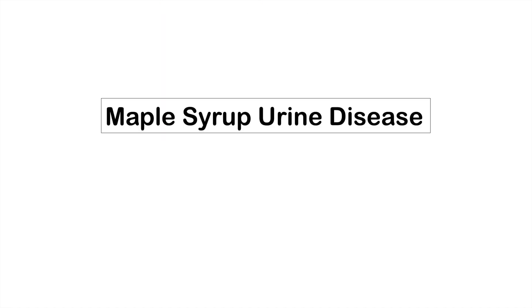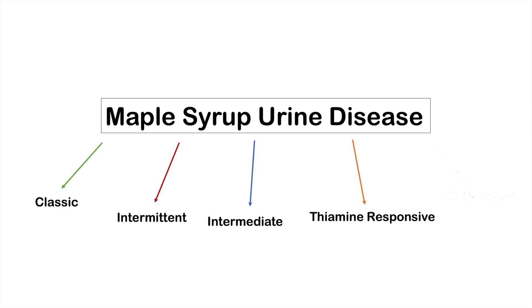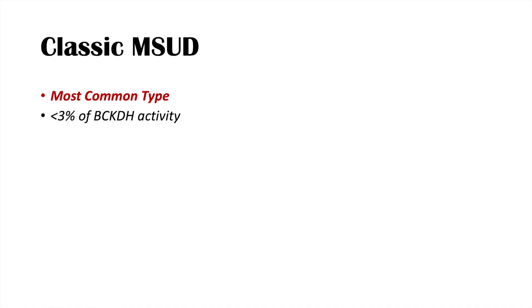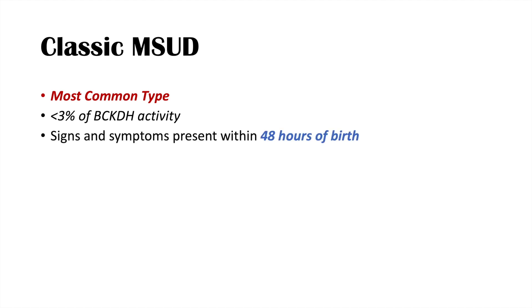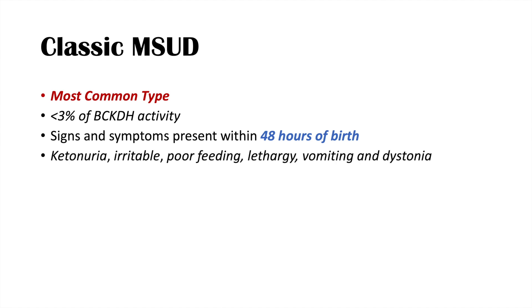There are several subtypes of maple syrup urine disease: classic, intermittent, intermediate, thiamine responsive, and E3 deficient. Classic maple syrup urine disease is the most common type and is characterized by a BCKDH activity level of less than 3%. Because it is so severe, signs and symptoms present within 48 hours of birth, including ketonuria, irritability, poor feeding, lethargy, vomiting, and dystonia.